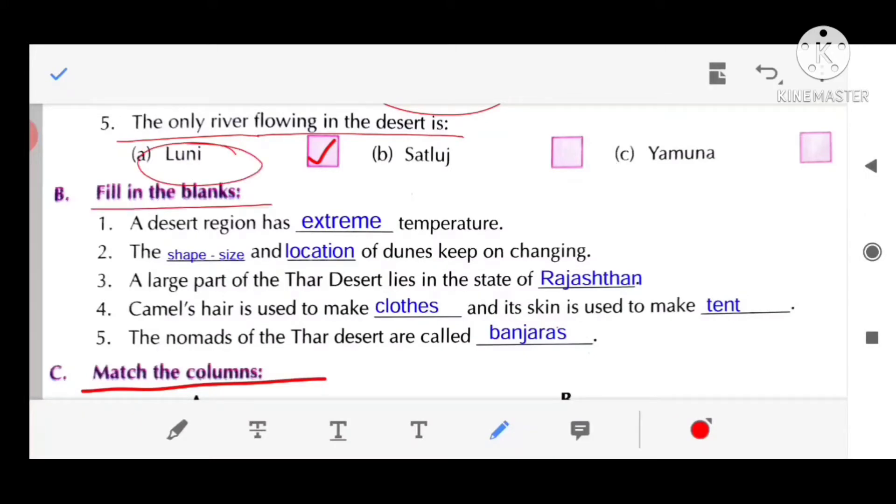Fill in the blanks. A desert region has extreme temperature. The shape, size and location of dunes keep on changing.